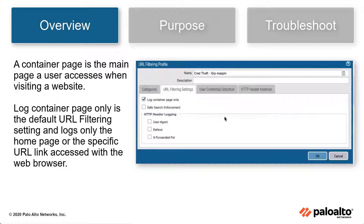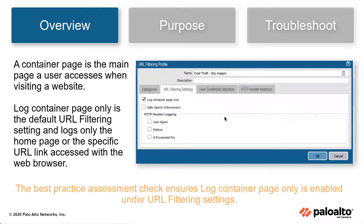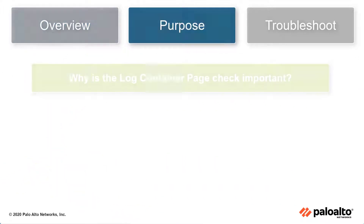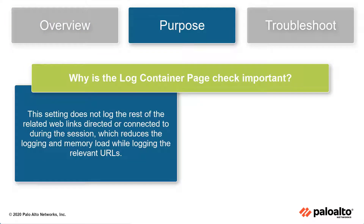A container page is the main page that a user accesses when visiting a website. Log container page only is the default URL filtering setting and logs only the landing or home page of the specific URL link accessed with the web browser. The Log container page best practice check ensures there is a checkmark next to Log container page only. This setting does not log the rest of the related web links directed or connected to during the session, such as advertisements and content links, which reduces the logging and memory load while logging the relevant URLs.